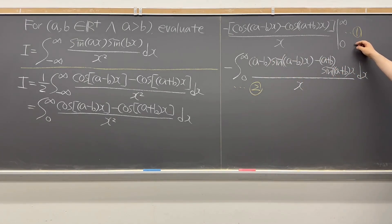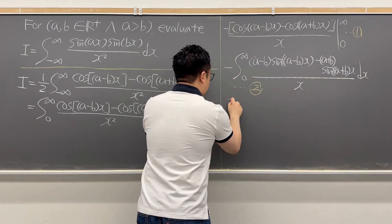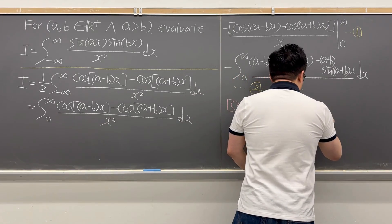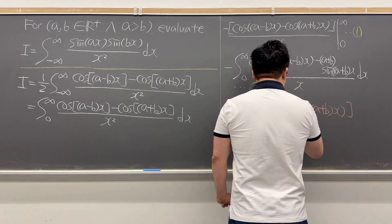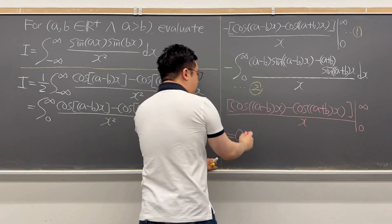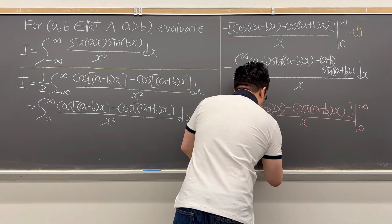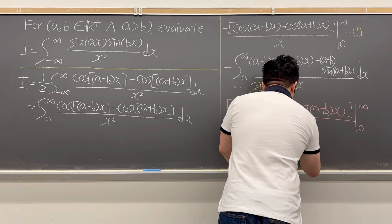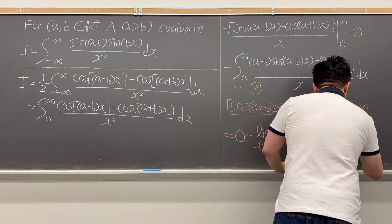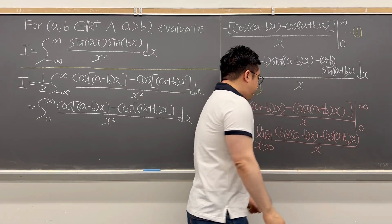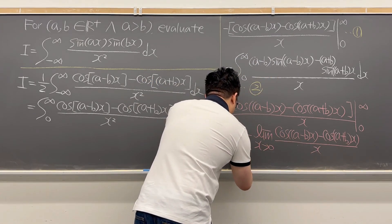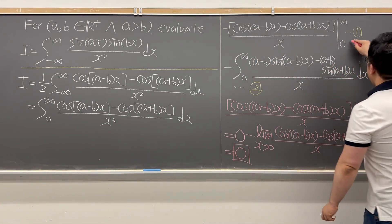We can easily check that the first expression equals zero. For expression one, we have cosine of (A minus B)x minus cosine of (A plus B)x divided by x, from 0 to infinity. At the upper limit it goes to zero, and at the lower limit, using L'Hôpital's rule the limit as x approaches 0 of that expression is also zero. So zero minus zero equals zero, meaning the first expression equals zero.